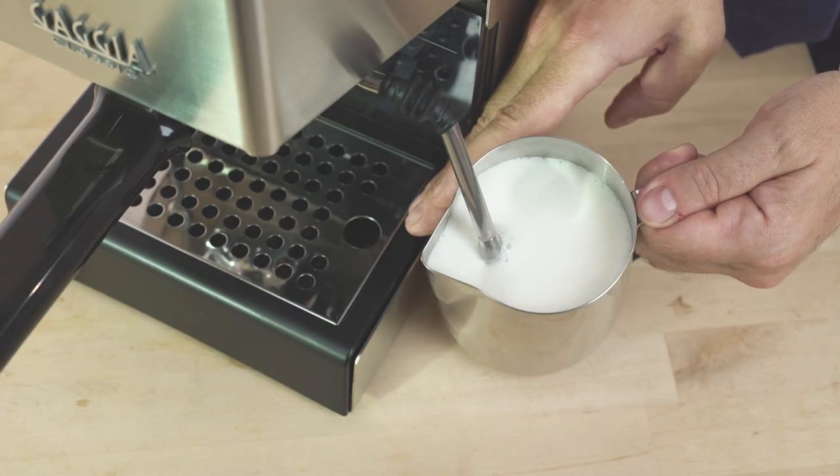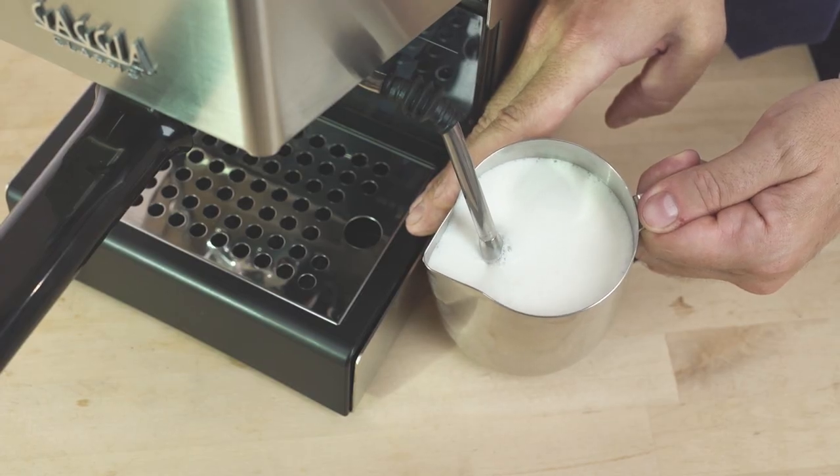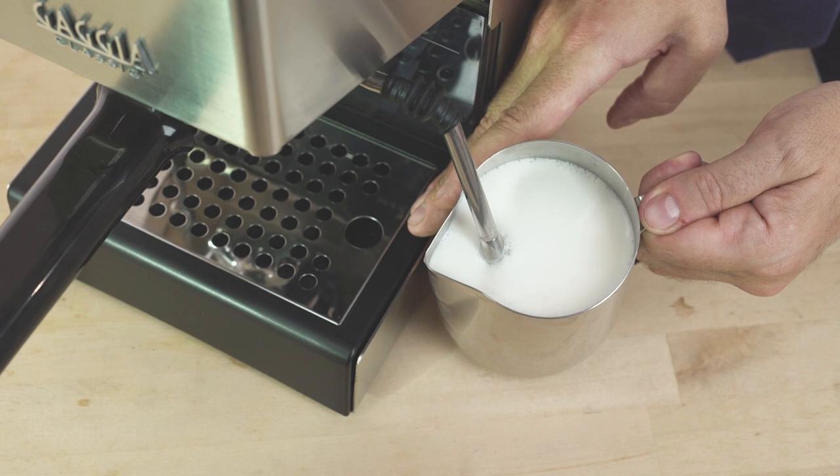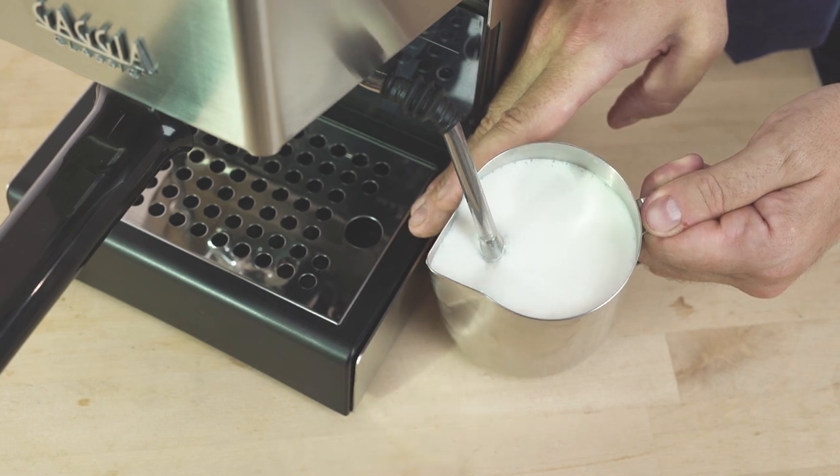During this phase, there is maximum air absorption. When the milk froth increases, maintain the steam nozzle immersed in the milk and not in the foam and avoid touching the bottom of the jug.